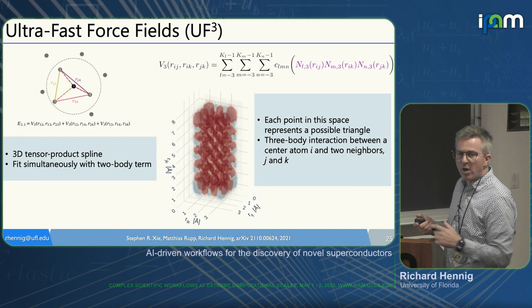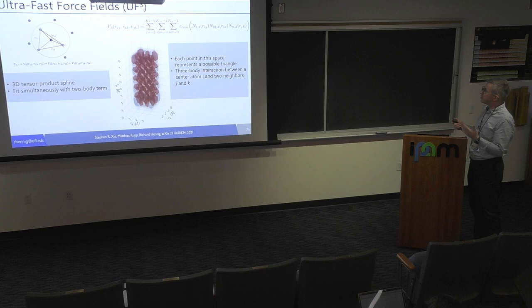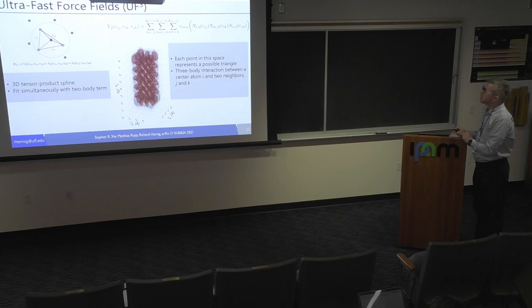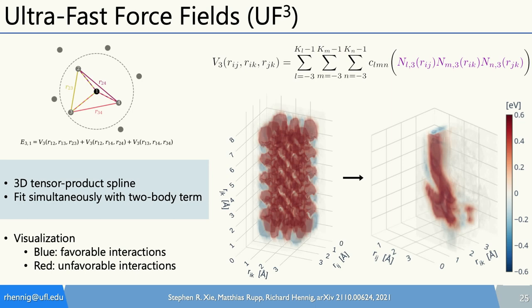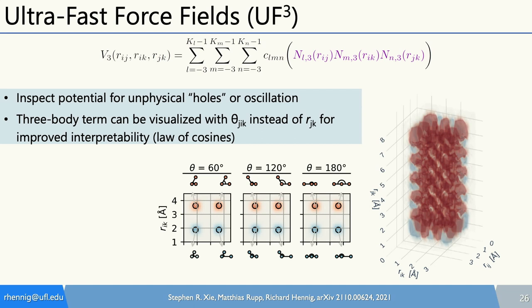We can visualize the three-body terms immediately — we know what they look like, where the potential is repulsive, where it's attractive, whether there are any holes. We can also take cuts and represent it as a function of angles: at what distances and angles is my potential attractive or repulsive? You can interpret whether it penalizes FCC or HCP structure for BCC tungsten, or favors the BCC structure because of the three-body terms — all directly visible for the user.